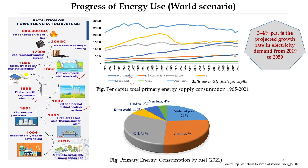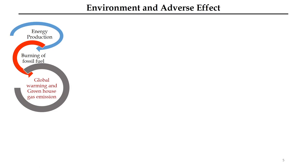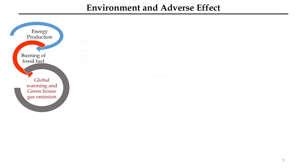This pie chart shows primary energy consumption by fuels. Most energy comes from fossil-based fuels, followed by renewables, hydro, and nuclear. Fossil fuels share the biggest contribution to electricity generation globally. As we increase per capita energy consumption, we need to burn more coal, which emits a lot of carbon dioxide into the earth's atmosphere, resulting in a rise in global temperature.